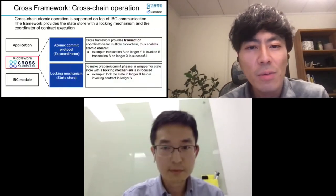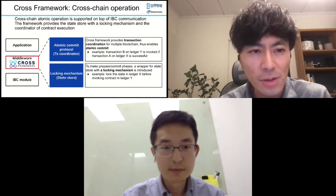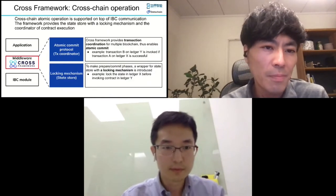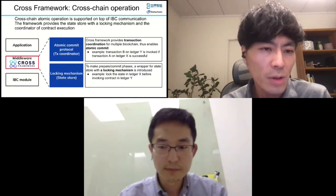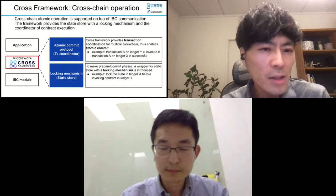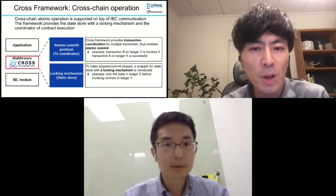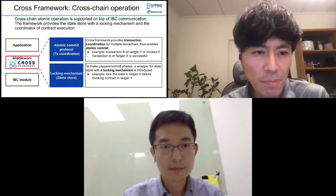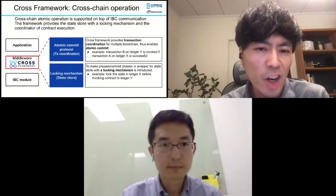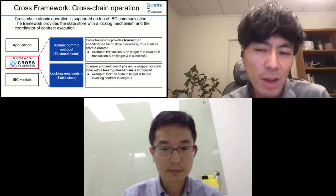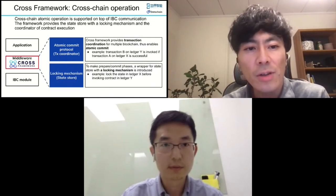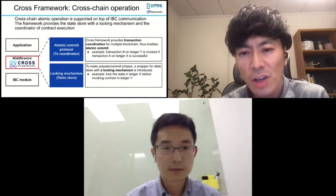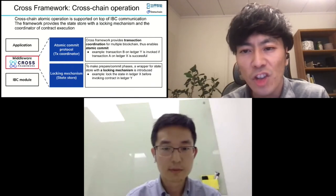We would also like to mention how we make use of these IBC modules for cross-chain operations. We have developed a cross-framework which enables developers to implement cross-chain smart contracts on top of IBC. The cross-framework mainly consists of two modules. The first is a transaction coordinator, which coordinates requests to execute multiple contracts among blockchains — it authenticates each contract call, invokes them, and manages their results. The second is a state store, a wrapper for the contract state store with a locking mechanism for cross-chain transactional operations such as two-phase commit.